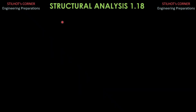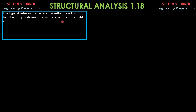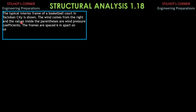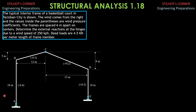In this video, let's have generation of wind loads to be incorporated with the dead loads in order to analyze the interior frame shown by computing the external reactions at the supports. The typical interior frame of a basketball court in Tacloban City is shown. The wind comes from the right and the values inside the parenthesis are wind pressure coefficients. The frames are spaced 6 meters apart on centers. Determine the external reactions at the hinges due to a wind speed of 250 kilometers per hour. Dead loads are 4.5 kilonewtons per meter length of frame member.